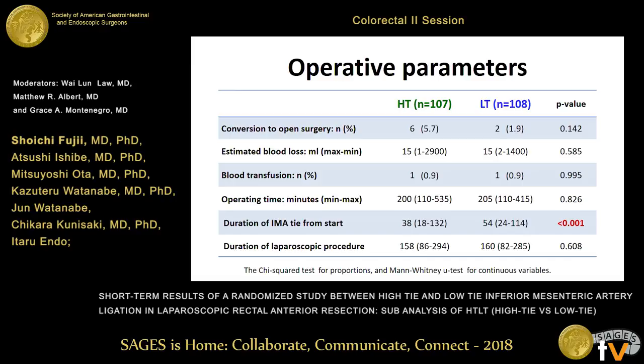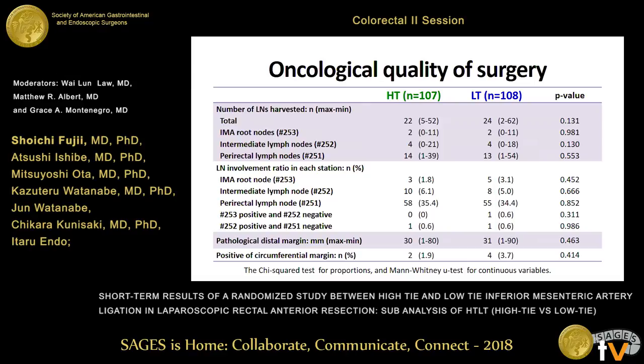In the operative parameters, most had no difference including operative time, amount of blood loss, and so on. However, there was a significant difference in the operating time to IMA ligation from the start of the operation; the low-tie group took 60 minutes longer than the high-tie group at the median. There were no significant differences in the number of dissected lymph nodes between groups in the total and at each station. No significant difference was observed in the pathological margins.